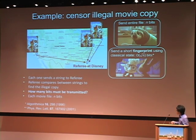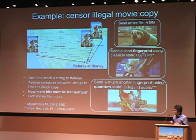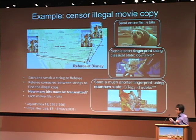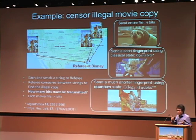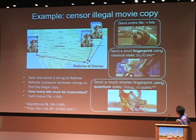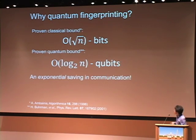Actually, this is not the end of the story. The smartest way is to use quantum fingerprinting. It has been proven in theory that if we use quantum states to encode this information, we only need log n qubits. The idea is similar to quantum computing — we can use n qubits to encode 2^n classical bits. Similarly, if we have n classical bits, we only need log n qubits to encode the information. So we have an exponential improvement over classical fingerprinting — exponential saving in communication.